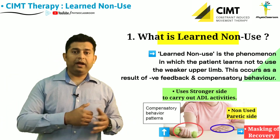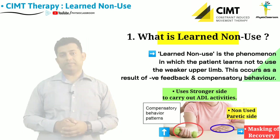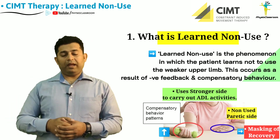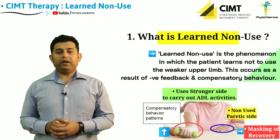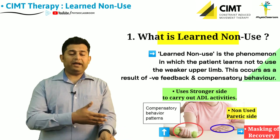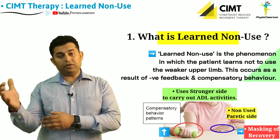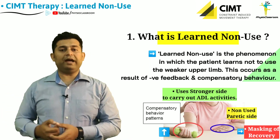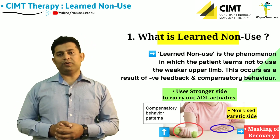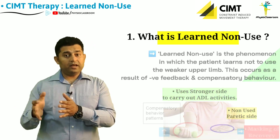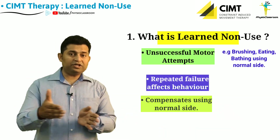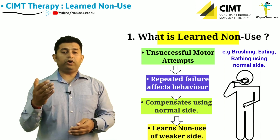This compensatory behavioral adaptation — learning not to use the weaker side and instead compensating by using the stronger side — is called learned non-use. That is, the patient learns over the initial period following stroke not to use the weaker side upper limb because of repeated failure and frustration.